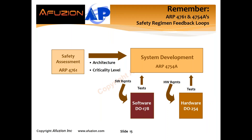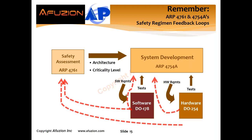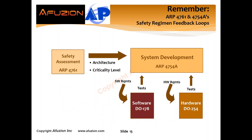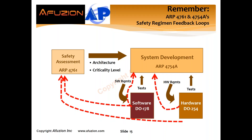Remember ARP 4761 and 4754A — those are the safety regimen. We have to remember that safety regimen is key with a feedback loop. Safety assessment upper left: what's the architecture, what's the criticality level? System development, system level requirements, then software and hardware requirements. But we have to show there's a feedback loop — software and hardware continuously feeding back into safety and systems.